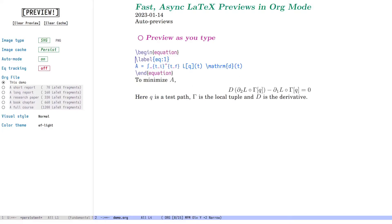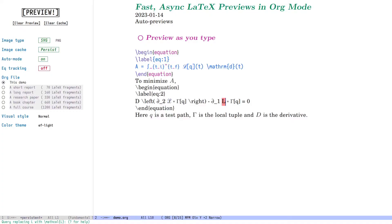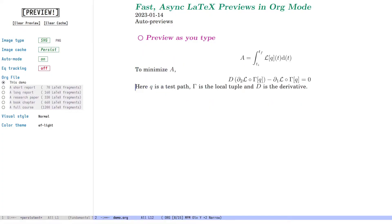This works more generally. For example, let's say I wanted to replace all instances of L with the calligraphic L. So that's one, two and three instances. And you can see that L has been replaced and the previews were auto-regenerated.